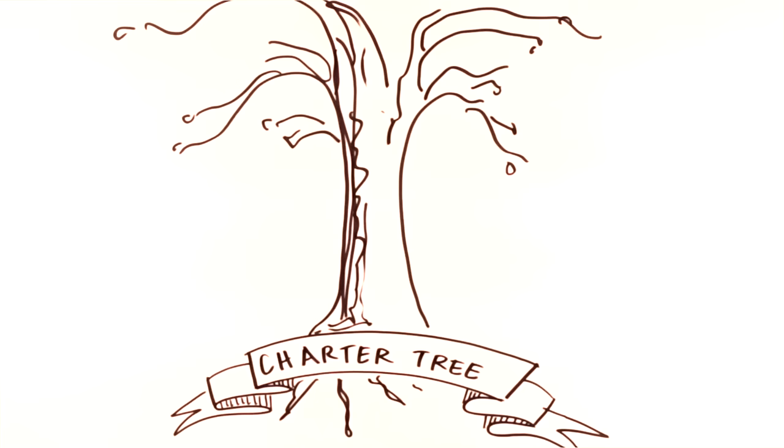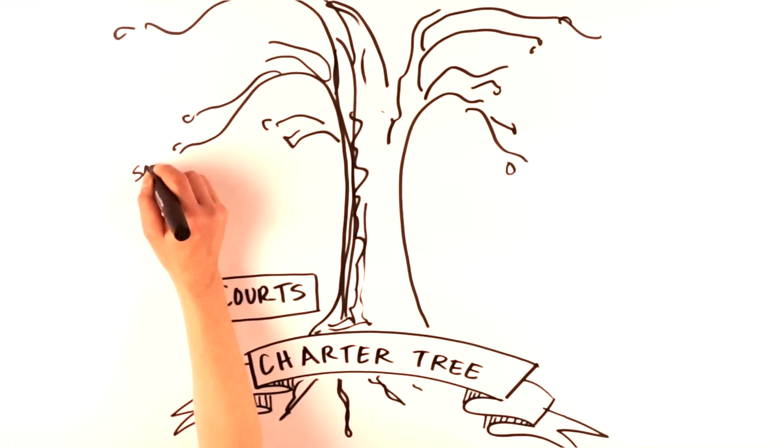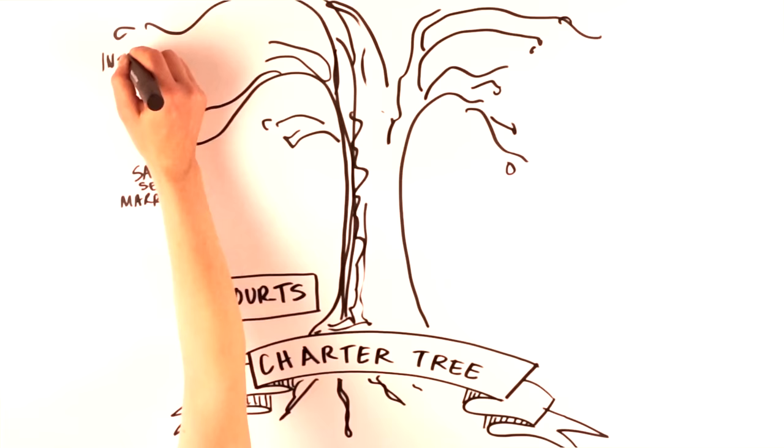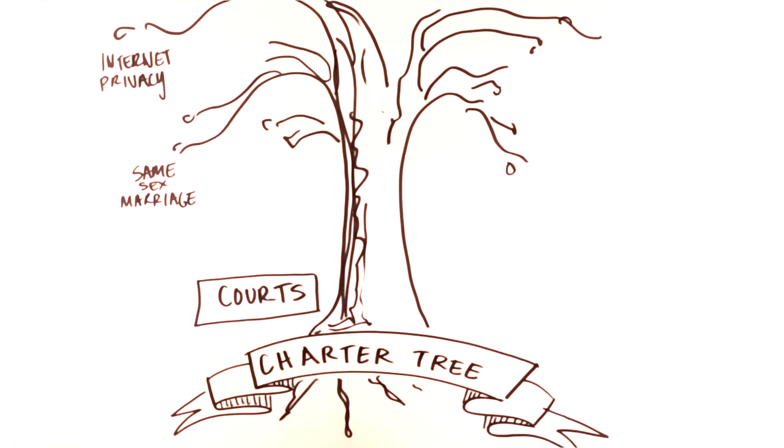For example, as the lifestyles of gays and lesbians have become increasingly accepted in our society, the Supreme Court has adapted by recognizing our Charter rights and freedoms as a basis for legalizing same-sex marriage. Similarly, the Court's understanding of our rights to privacy have changed since the dawn of computers and the Internet. These types of changes are considered natural, just like a living tree grows. The rulings of the Supreme Court allow parts of the tree to grow.